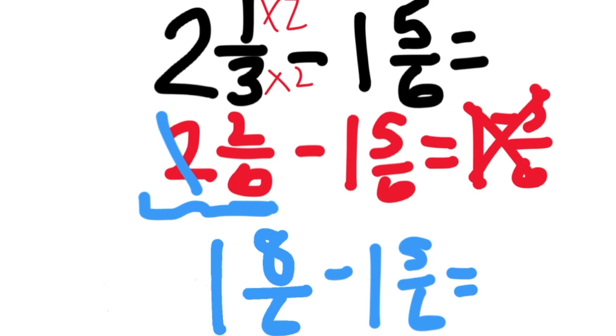We can definitely do 8 over 6 minus 5 over 6. And the 1 minus 1 whole is 0 whole, so the answer is just 3 sixths. And remember to simplify. 3 sixths is the same as a half.